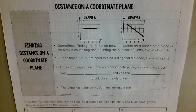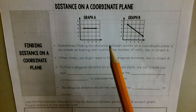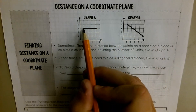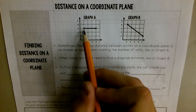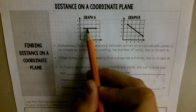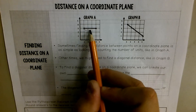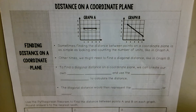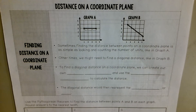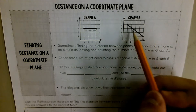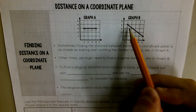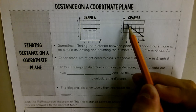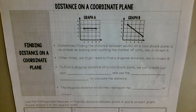Sometimes finding the distance between points on a graph is super easy. Like on graph A, we would just count from here to here — it's on a straight line, so we could just go 1, 2, 3. But sometimes we can't do that. Like on graph B, this is not a straight line along one of our grid lines, so it's not easy to count.